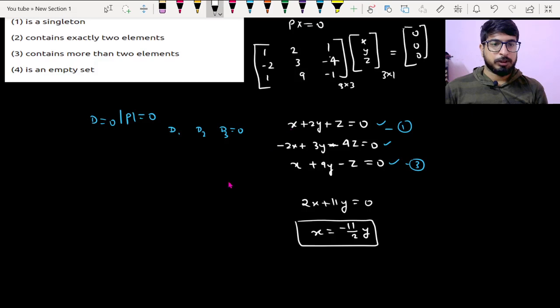If I multiply by 2 in the first equation and add in the second equation, what will I get? 7y minus 2z equal to 0.